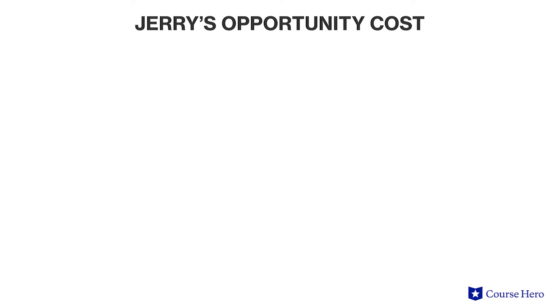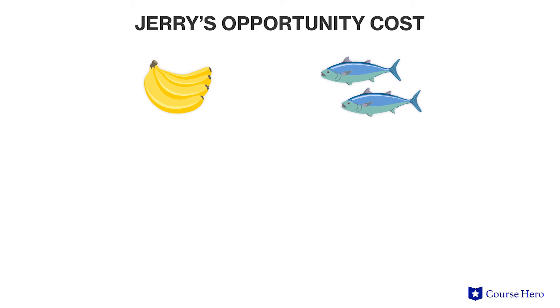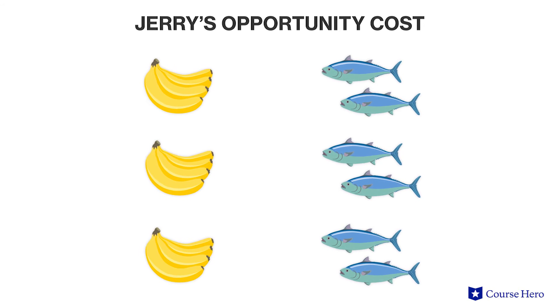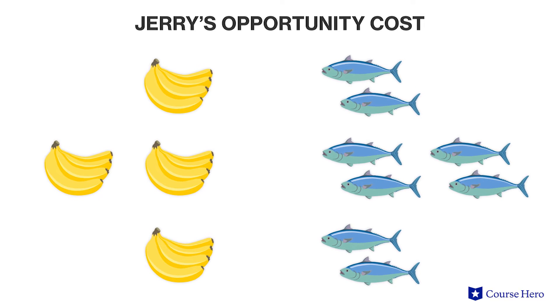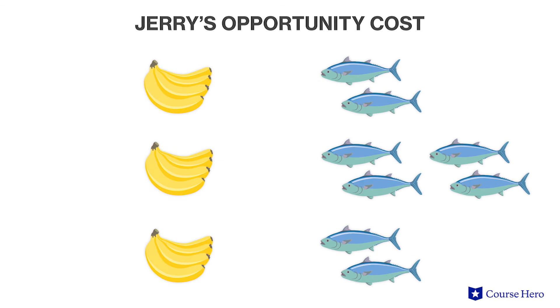Jerry's PPF shows that in the same time that he can catch two fish, he could gather one bunch of bananas. His opportunity cost reflects that for every bit of additional time he spends catching fish, he has less time to spend gathering bananas. If Jerry's opportunity cost is constant, that means he doesn't face other costs like travel time. Every time he catches one more fish, he gives up gathering half a bunch of bananas. By drawing a straight-line PPF for Jerry, we assume he faces constant opportunity cost regarding his decision of how many fish and bananas to collect.